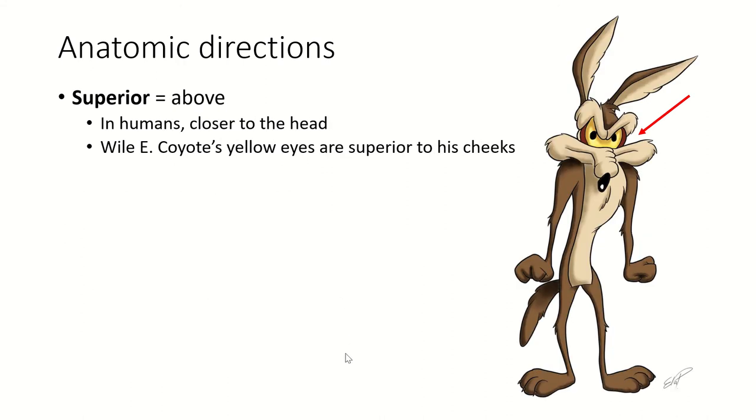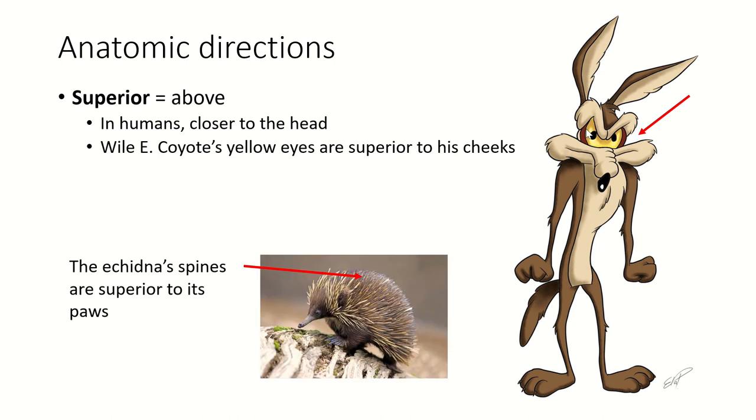Okay, superior means above. So in humans, we are talking about something that's closer to the head or on the head, the top of the head. Wile E. Coyote's eyes are superior to his cheeks, meaning they are above. The echidna's spines are superior to its paws. Okay, on the echidna, the dorsal side is superior. On Wile E. Coyote, the dorsal side is posterior. See how you can use these together?